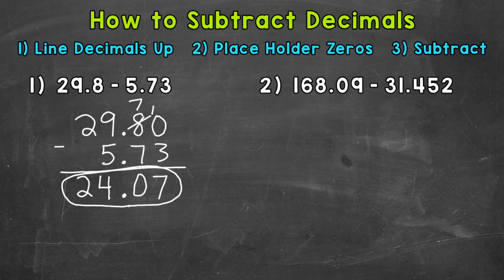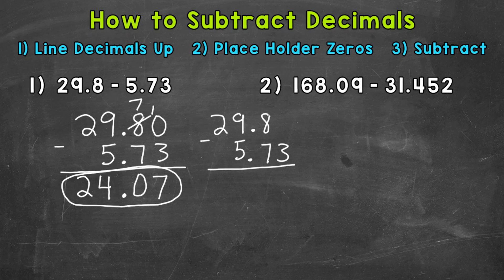Before moving to number 2, I do want to mention a couple of common mistakes when we subtract decimals. The first one: 29 and 8 tenths minus 5 and 73 hundredths — the first mistake would be dropping this 3, assuming that we can just drop the 3. But in reality, remember, we have a 0 here and we need to borrow. So don't just drop a number if there is nothing above it. We need to use borrowing because there is a 0 there.